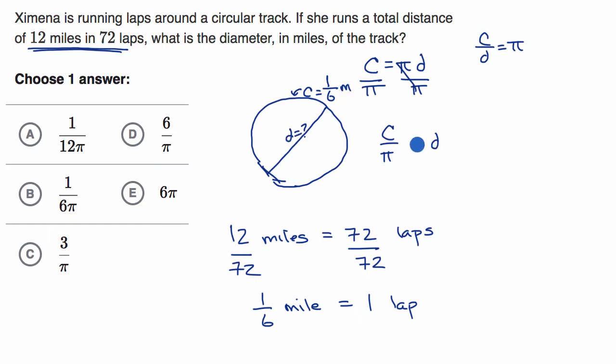So what's the diameter? Well, it's going to be the circumference divided by pi. So the diameter is going to be the circumference, let me write this, it's a mile, not a meter. So it's going to be one-sixth of a mile, which is the circumference divided by pi. Now that is the same thing as one over six pi of a mile.